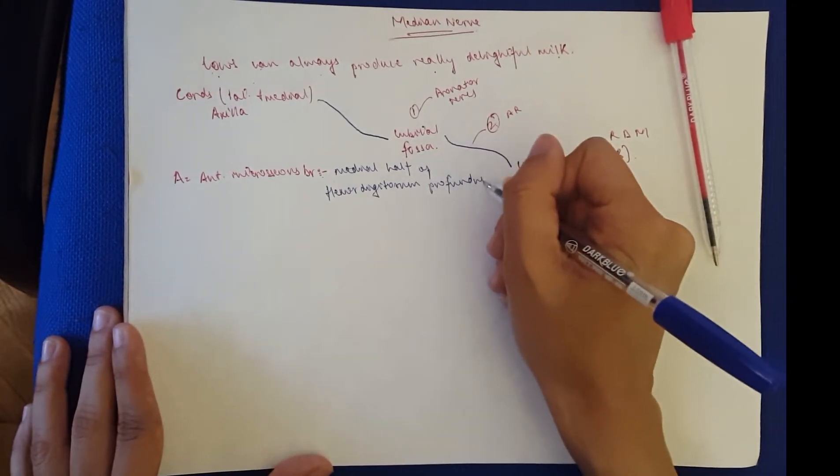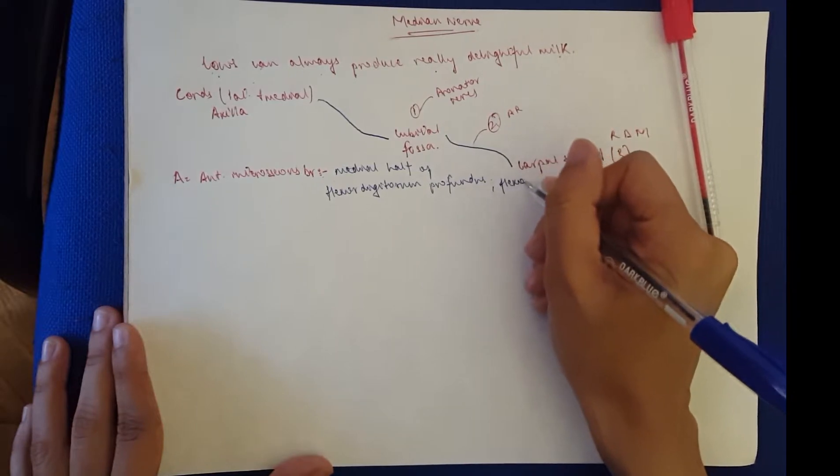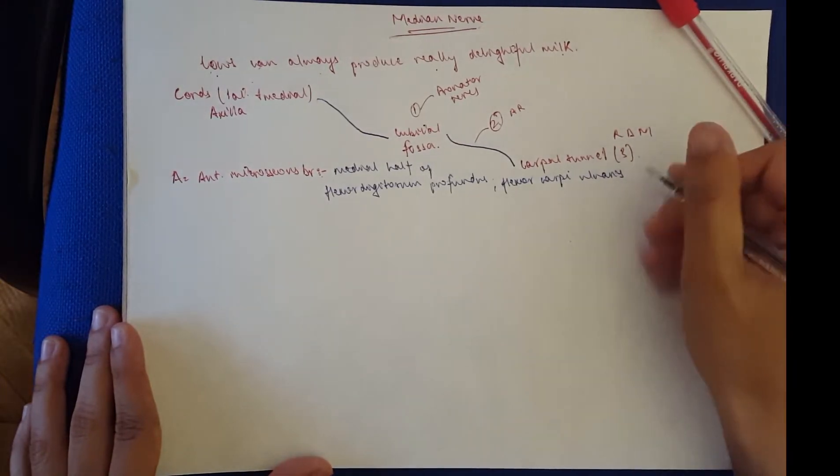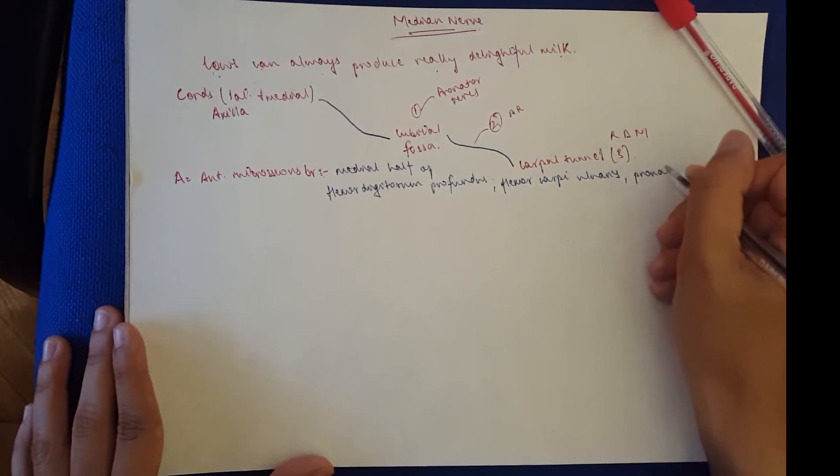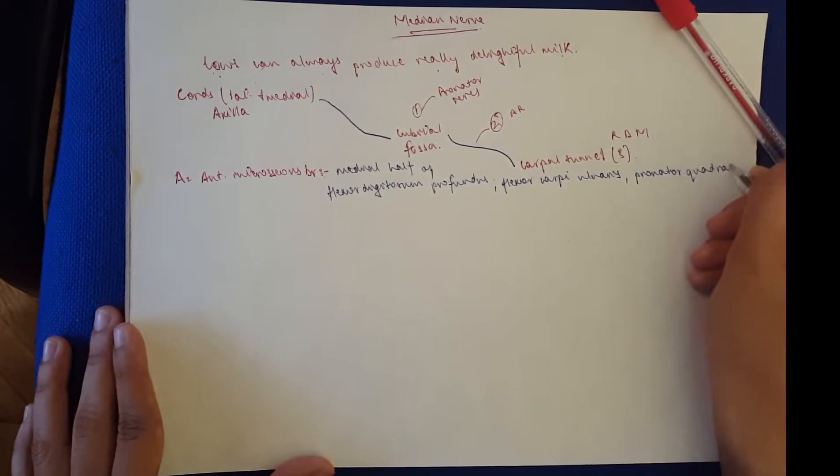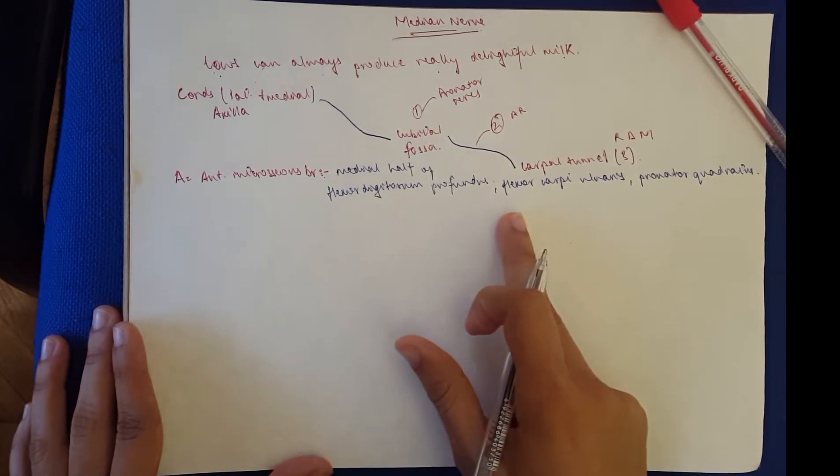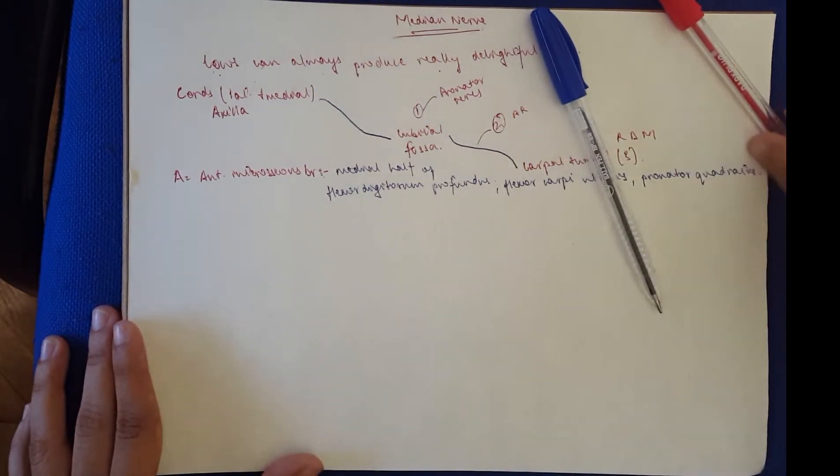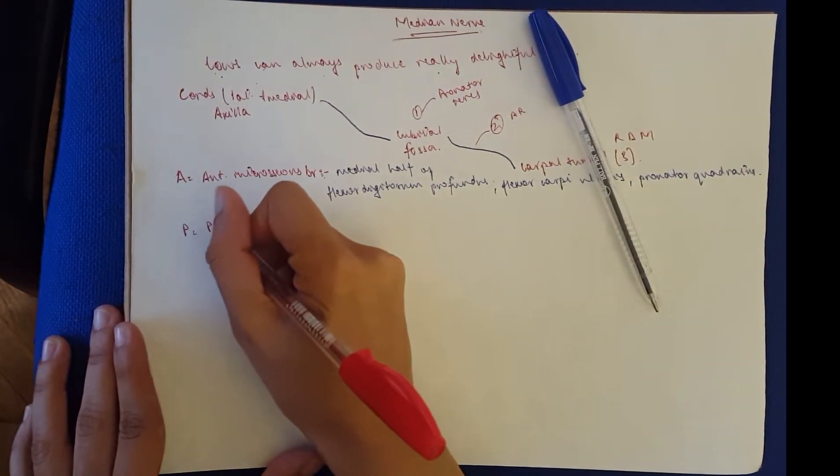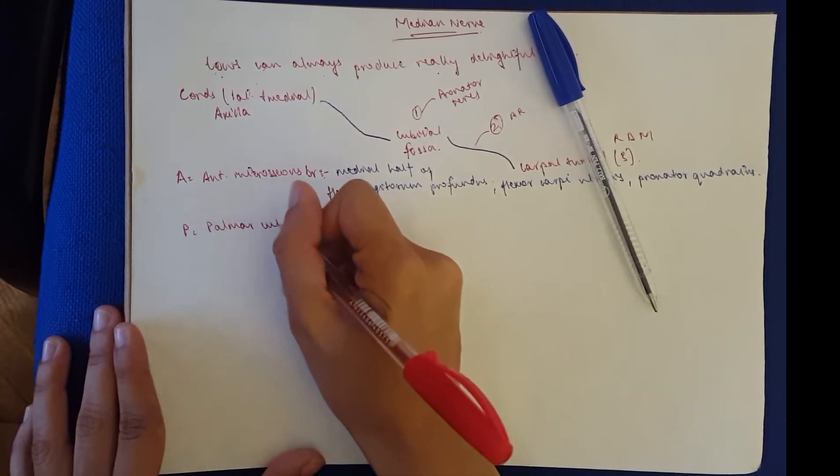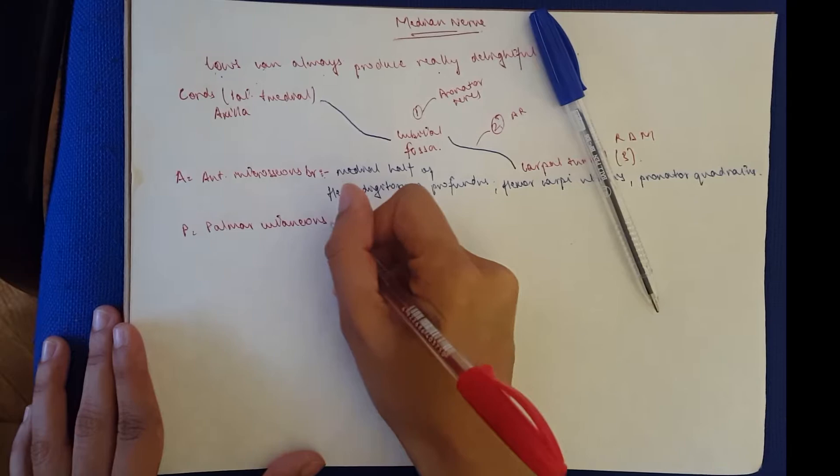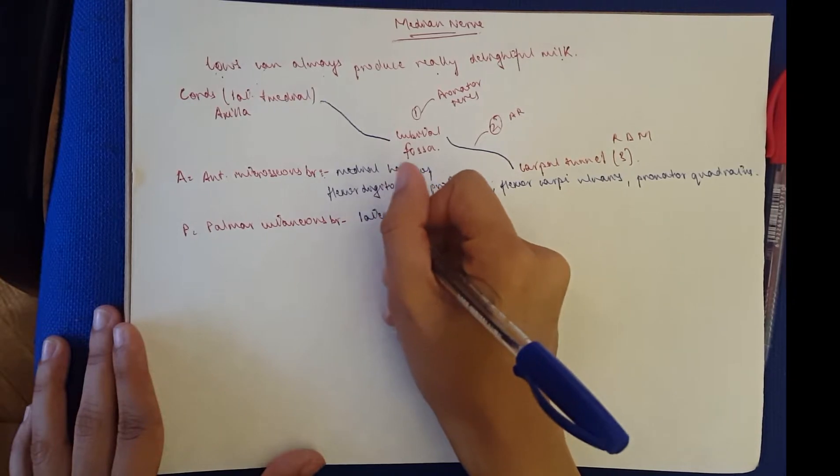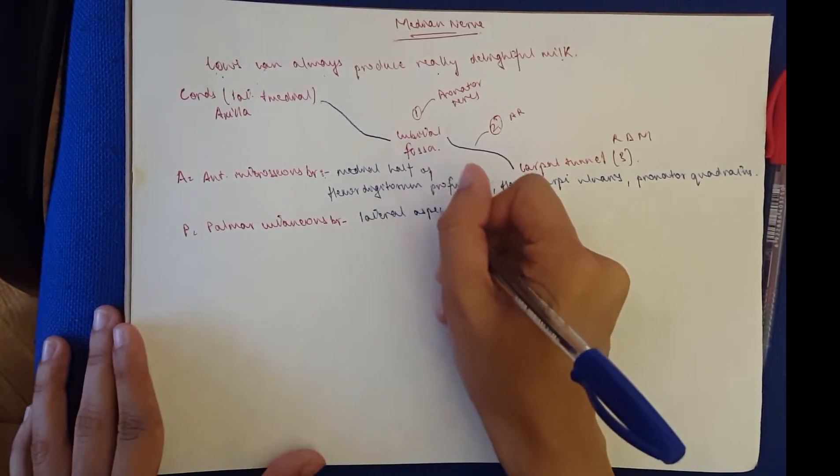It doesn't supply the flexor carpi ulnaris nor the pronator quadratus. So apart from these, it supplies the deep group of the anterior compartment of the arm. P is the palmar cutaneous branch. It has to supply the skin sensory innervation to the palm, and it does so by giving it to only the lateral aspect of the skin of the palm.